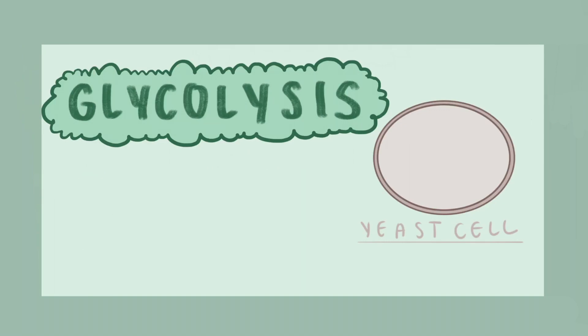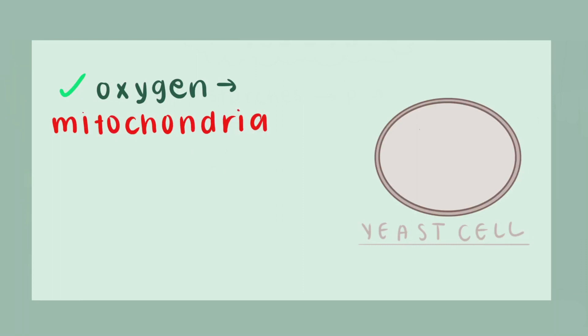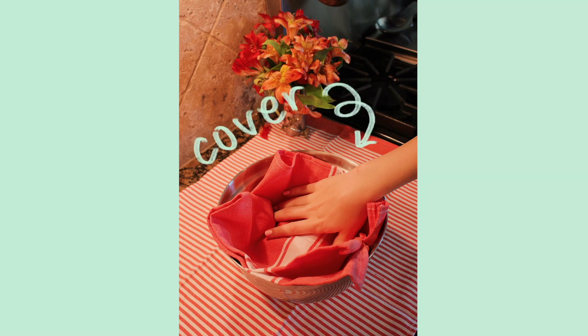The next step depends on whether or not there is oxygen available to the cell. If oxygen is available, the yeast cell will convert this acid into energy in the mitochondria, or the powerhouse of the cell. If oxygen is unavailable, the cell has to use fermentation to get energy. This is why it's important to cover our dough with plastic wrap and a cloth — to prevent as much oxygen as possible from contacting our dough while it rests.